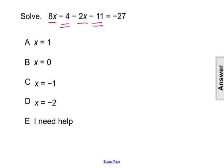Again, we're completely simplifying that left side of the equation. So 8x minus 2x will give us 6x and negative 4 minus 11 will give us negative 15. So then that still equals the negative 27 on the right side of the equal sign.